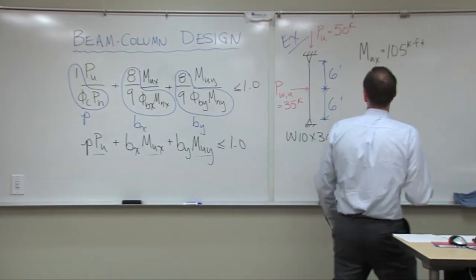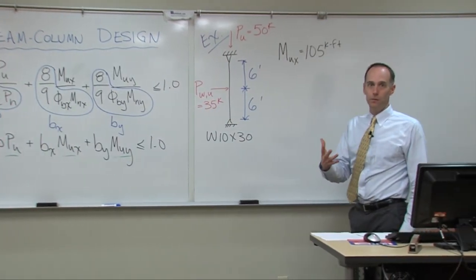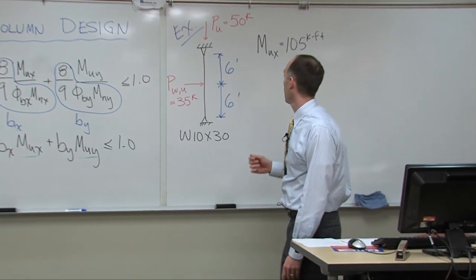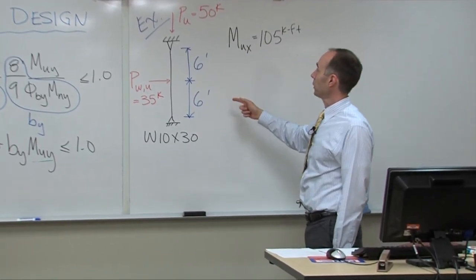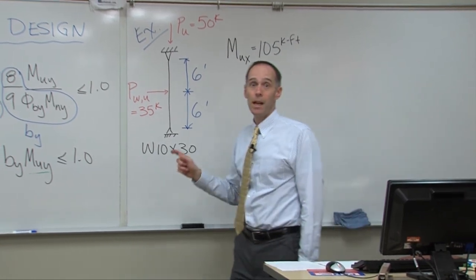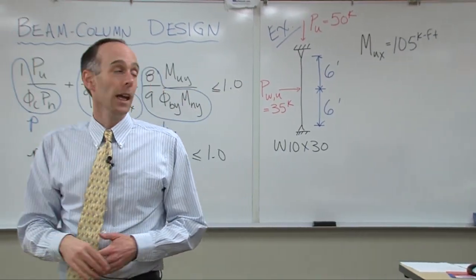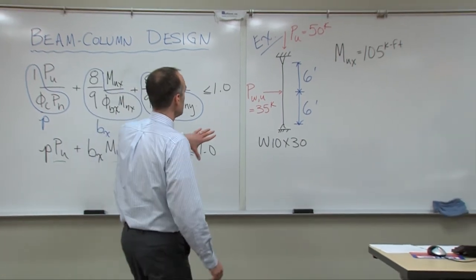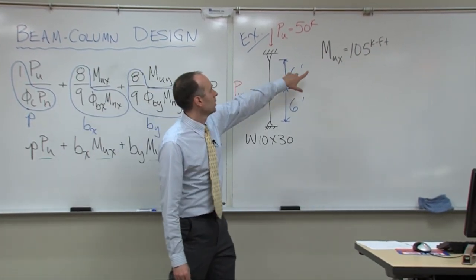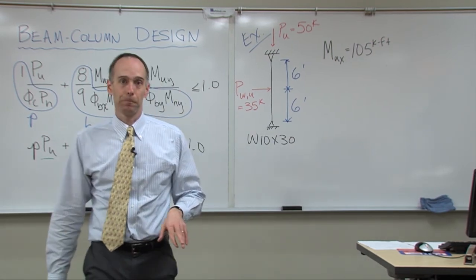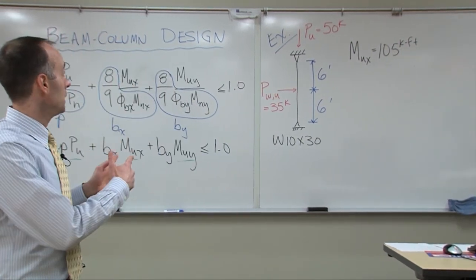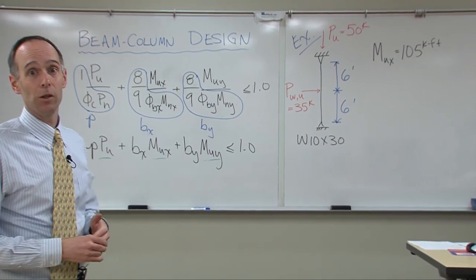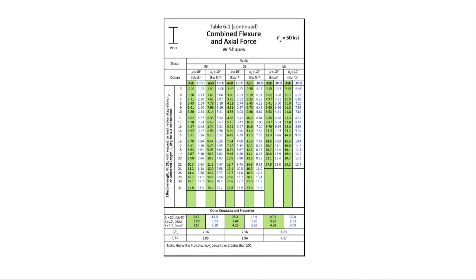If you remember from that first class period where we talked about beam-columns, we had this example: a column with a 50-kip axial load and a 35-kip wind load. We found a maximum moment of 105 kip-feet from that loading. So now let's use these values to calculate and see whether or not that beam-column is adequate. Using Table 6-1 — this is on page 6-88 — we find the W10 by 30.